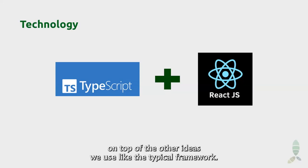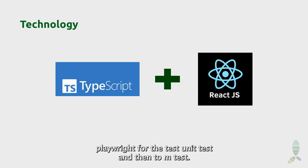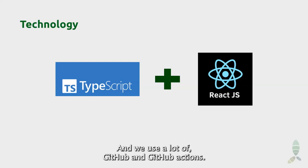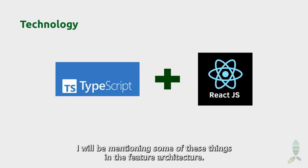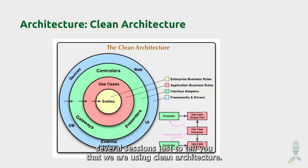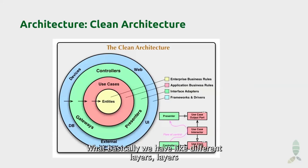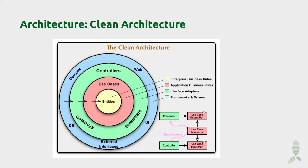Regarding architecture, we are using Clean Architecture. This is particularly useful for scalability and for testing. Basically we have different layers and it facilitates testing and maintaining the apps. For some of our apps we have DHIS as a backend, but we can also have different backends, and Clean Architecture is particularly useful for that.